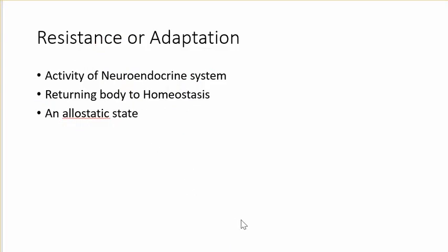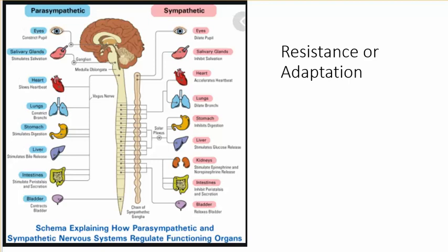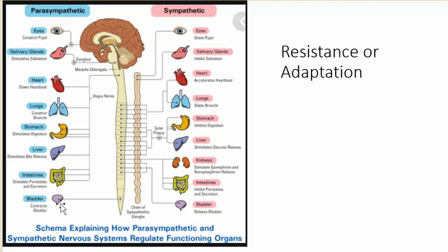In the resistance or adaptation phase, this is the activity of part of the neuroendocrine system that is helping to return the body back to homeostasis — it's an allostatic state. After the sympathetic has been working and we've run from the bear, the parasympathetic kicks in to bring us back to normal. Pupils constrict again, salivary glands are stimulated, heartbeat slows, bronchi constrict, digestion is stimulated, bile release is stimulated, peristalsis and secretion are stimulated, and the bladder contracts — so now we get pee and poop.